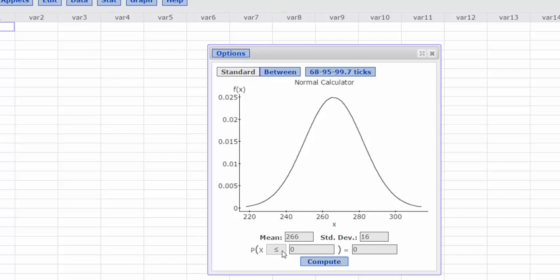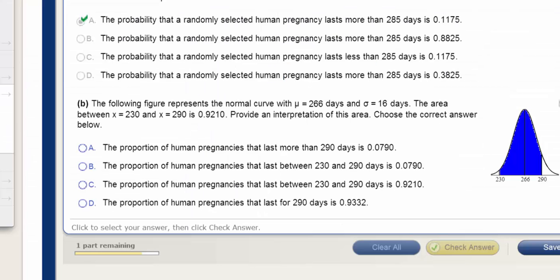This is giving me the area to the left of zero. But remember, we want the area between two points. So I'm going to select Between and then go back and look at the values we have. We have some number between 230 days and 290 days.